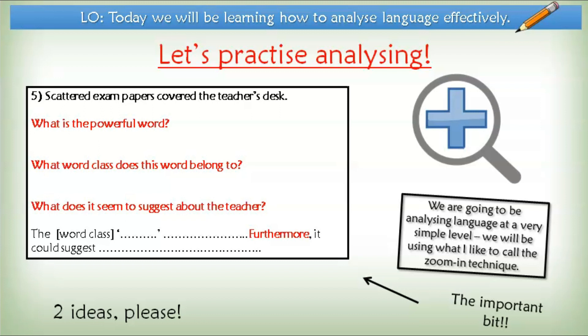Hopefully you managed to identify that adjective 'scattered' and that verb 'covered'. Taking that adjective 'scattered', I might be inclined to put something along the lines of: the adjective 'scattered' shows how the teacher is perhaps disorganized. Furthermore, it could suggest that they have a lot of work to do and maybe they are struggling to keep on top of things. Anything along those lines would be perfect.